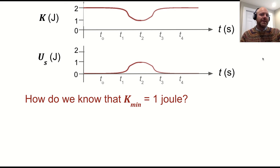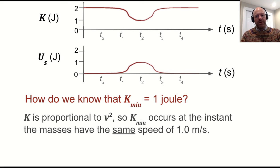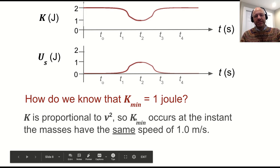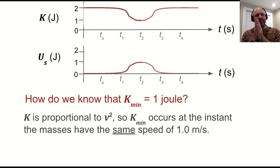So I said that the kinetic energy was dropped down to one joule, and the question is how do I know? Well, K is proportional to v squared, so the minimum occurs when the masses have the same speed because that's when they're going the slowest. So that's really what we're looking at there.